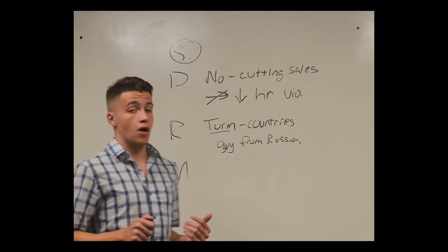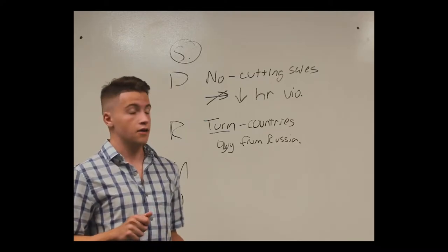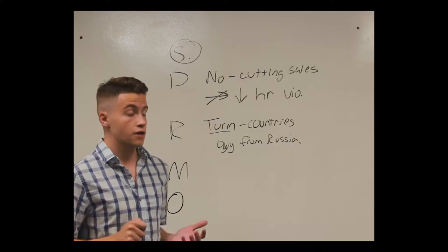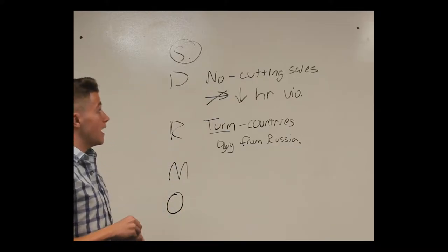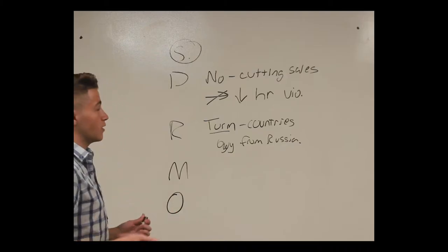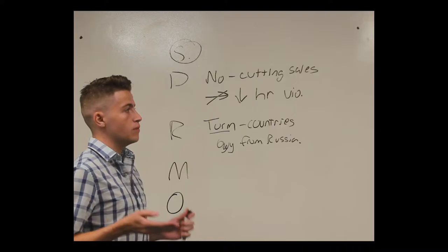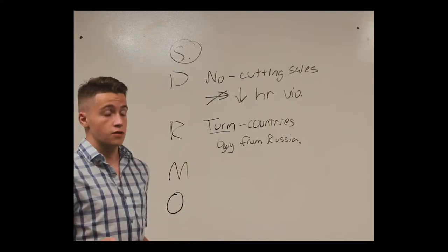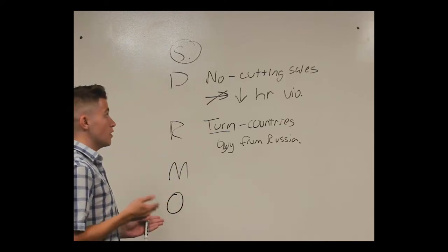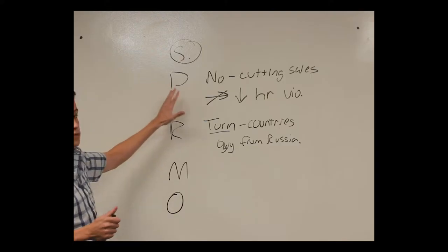Outweigh is harder to use because you have to talk about your impacts. This assumes you have already read your manufacturing disad. Your manufacturing disad says that arm sales are good because they preserve American military readiness. So you can make the argument that cutting arms sales may reduce human rights violations; however, the collapse of US military readiness is far more important than reducing human rights violations. Because if we aren't militarily prepared, how can we prevent other countries from violating human rights in other capacities? D and R are probably the most important parts for responding to solvency.